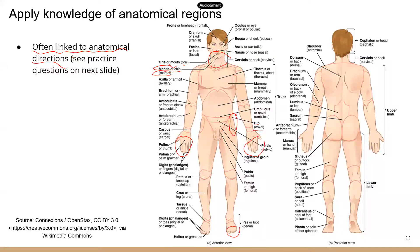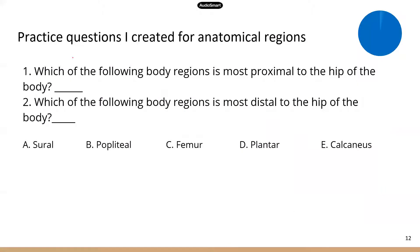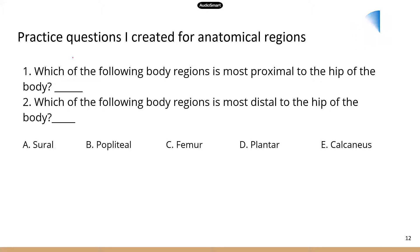Now I'm going to show you two practice questions that I created. You will have 30 seconds to answer each question, and then I will show you the answer. To answer the first question, you have to know first what proximal and distal mean, and second, you need to know where all five body regions are. Normally on TEAS you will see four answer options, but here I made it a little bit harder with five options.